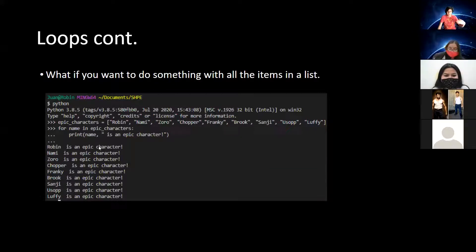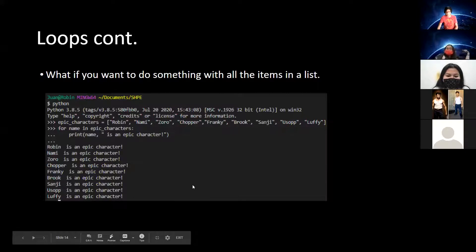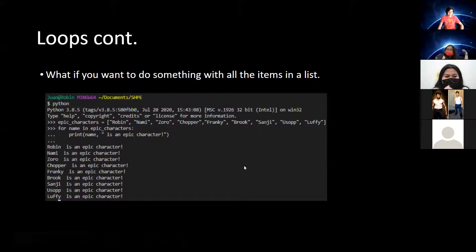Loops and lists go well together. You can go through a list with a for loop. We're saying: for every value in a list, do something with it. In this case, 'for name in this list: print it'. As you can see, it prints out all the values.